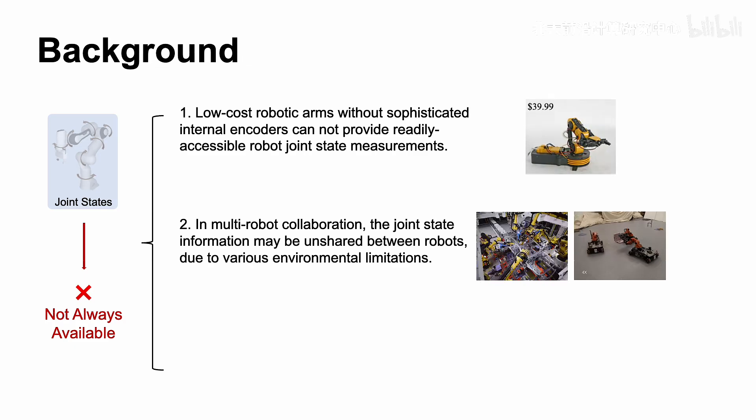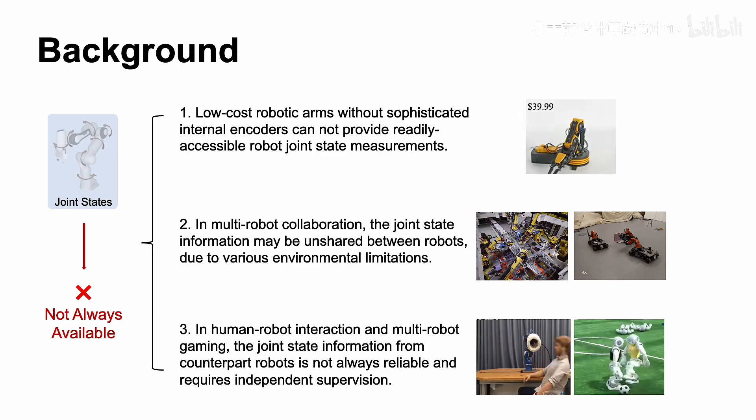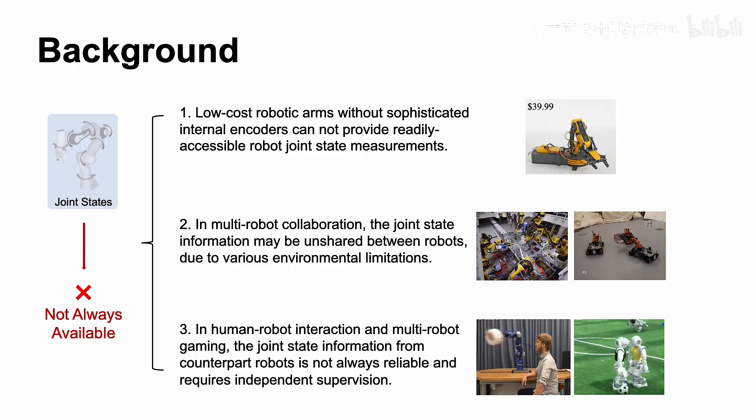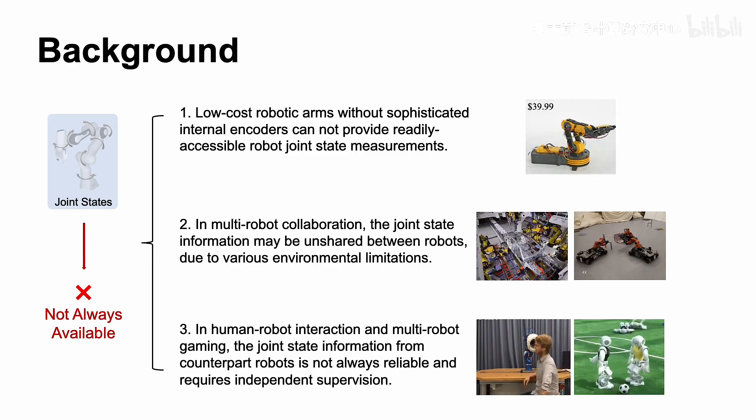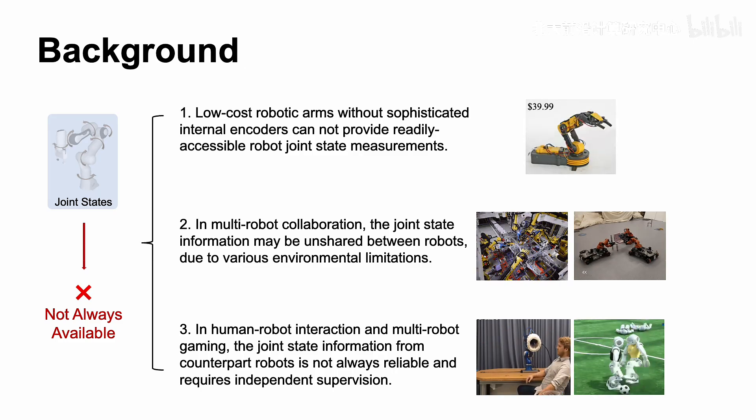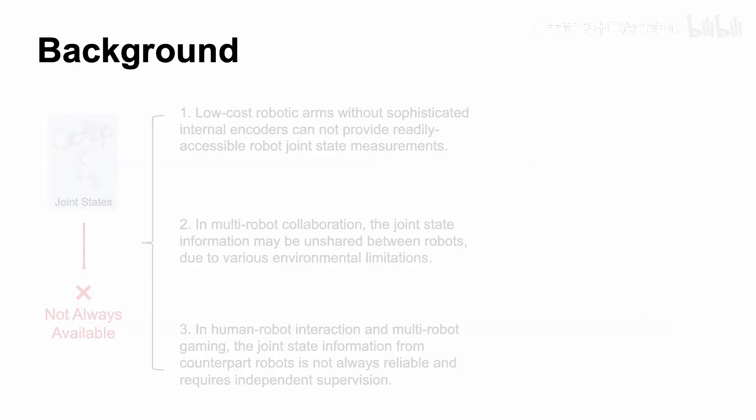Moreover, in multi-robot collaboration, the joint state information may be unshared between robots due to various environmental limitations. Furthermore, in human-robot interaction and multi-robot gaming, the joint state information from counterpart robots is not always reliable and requires independent supervision. These scenarios further emphasize the urgent need for robot pose estimation with unknown joint state.